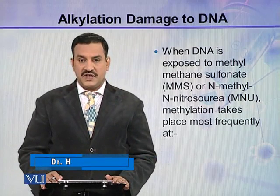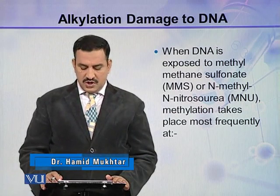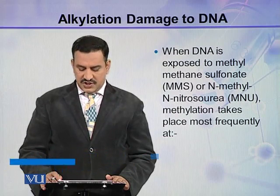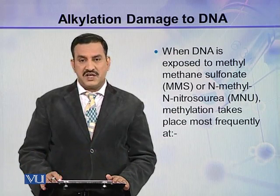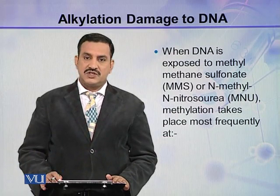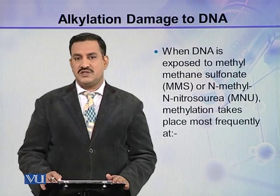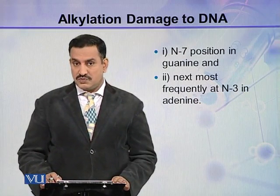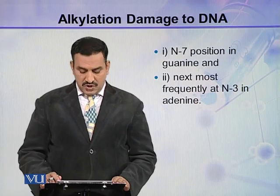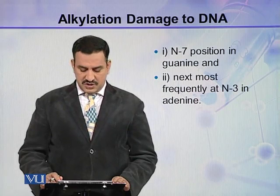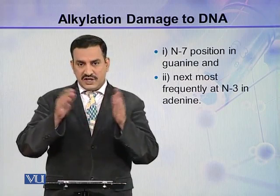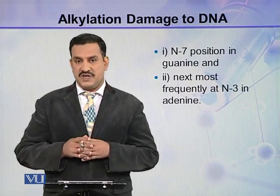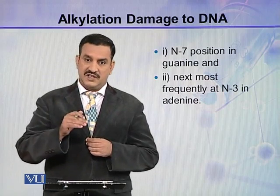When DNA is exposed to methyl methane sulfonate (MMS) or N-methyl N-nitrosourea (MNU), methylation takes place. This methylation may occur at two sites — one very frequent and the other quite less frequent. The most frequent site for methylation by MMS or MNU is the N-7 position in guanine, where a nitrogen is present at position 7 of the guanine ring.